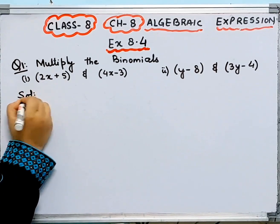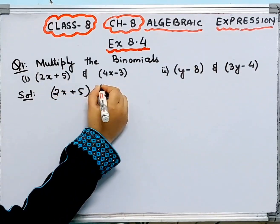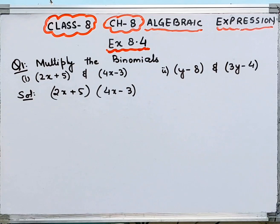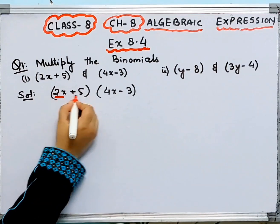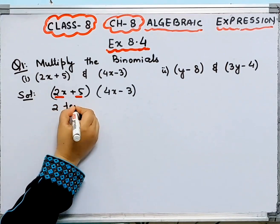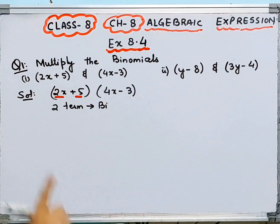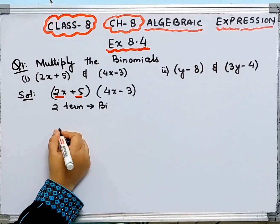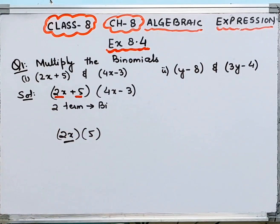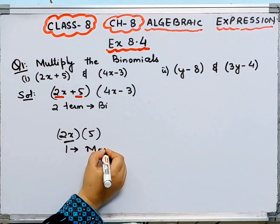You have 2x plus 5, and you have to multiply this by 4x minus 3. What are binomials? In this algebraic expression, there are two terms. When you have two terms, we call it binomials — bi means 2. If you have 2x into 5, that is one term, which is called a monomial — mono means 1.